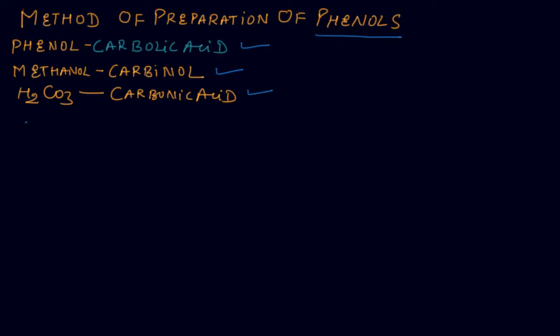First method of preparation of phenol is the Down process. It is commonly known as Down process. It's a very simple method. In Down process you will take the chlorobenzene.